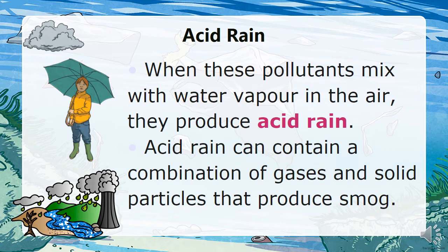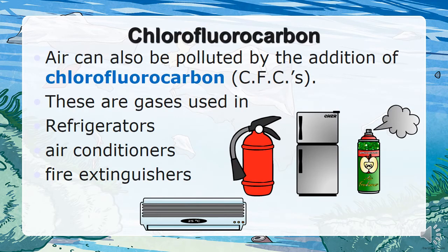When these pollutants mix with water vapor in the air, they produce acid rain. Acid rain can contain a combination of gases and solid particles and produce smog.